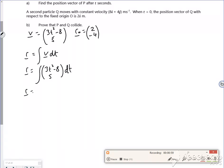So r is going to be t cubed minus 8t and 5t. Now remember that's plus a c1, that's plus a c2. Right, let's have a look again.